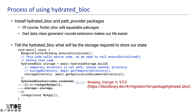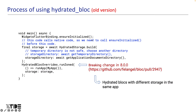First, we need to install the hydrate_bloc and path_provider packages, as well as flutter_bloc and equatable. The .DataClass generate extension is a great help in using HydrateBloc. The next thing we need to do is tell HydrateBloc where to store our state — the directory is designated using the HydrateStorage.build function. You can specify a temporary directory using getTemporaryDirectory, but it is not safe because the temporary directory can be deleted by the system. Save the return value of HydrateStorage.build to HydrateBloc.storage. Since HydrateStorage.build calls native code, WidgetsFlutterBinding.ensureInitialized must be called first.